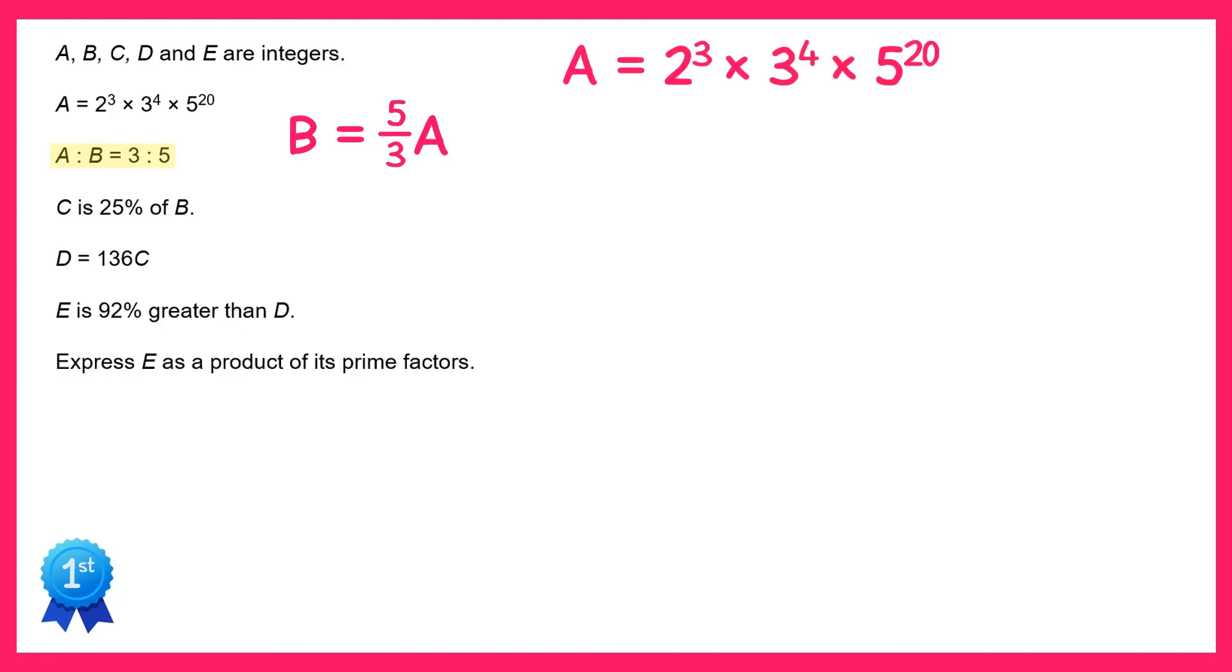Now we're given A in the question, it's this. So to find B we're going to take A, divide it by 3 and multiply it by 5. Now if we divide by 3 and multiply by 5 the power of 2 will remain unchanged, so 2 to the power 3.